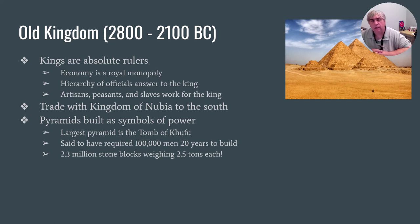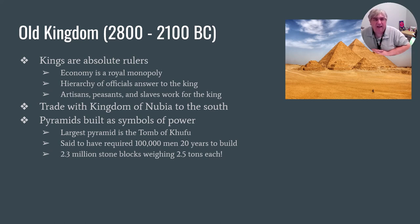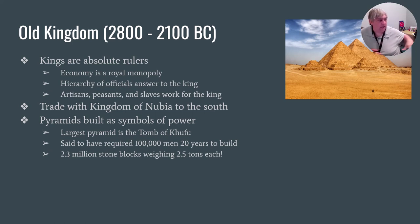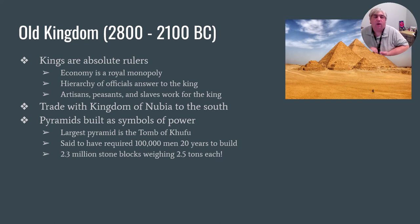After that we come to the Old Kingdom, which lasts basically 2800 to 2100 BC, and Egypt is going to be led by kings. They're not pharaohs — they're just kings — and these kings are going to be absolute monarchs. They're very powerful, but they're not gods or anything like that; that happens later. The entire economy of the kingdom is based on a royal monopoly. All the peasants, slaves, and artisans work for the king. All the food is brought to the king and then the king gives it back out to other people.